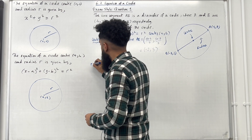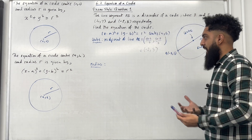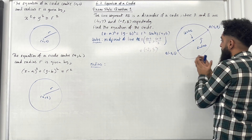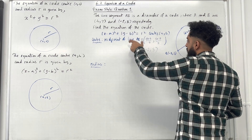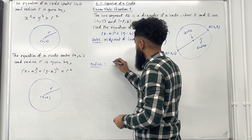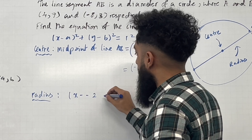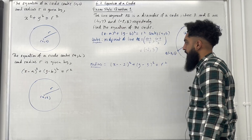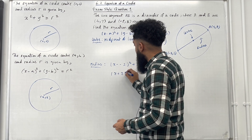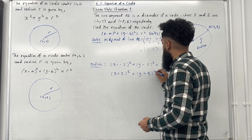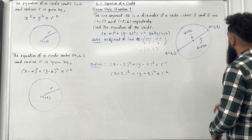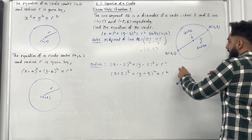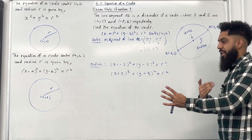Next step: radius. The method is to use the equation of the circle with the centre substituted in. Taking the equation and substituting centre (-2, 5), we get: open bracket x minus minus 2 close bracket squared plus open bracket y minus 5 close bracket squared equal R squared. Cleaning this up: bracket x plus 2 squared plus bracket y minus 5 squared equal R squared. Since both point A and point B lie on the circle, I can substitute x and y for A or B to generate an equation involving R, then rearrange to find R.